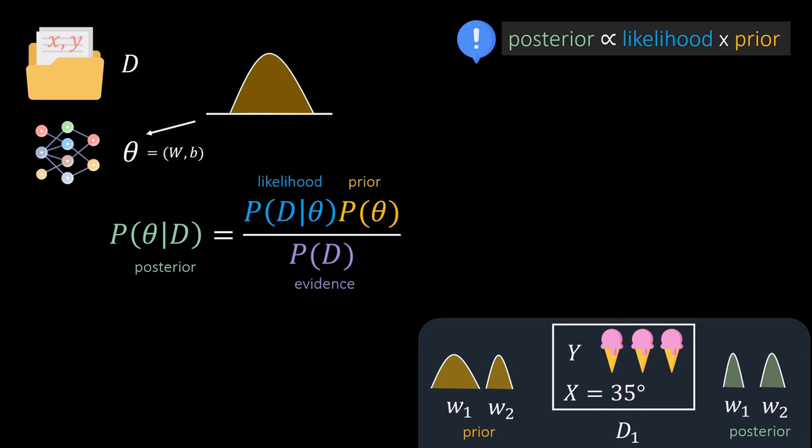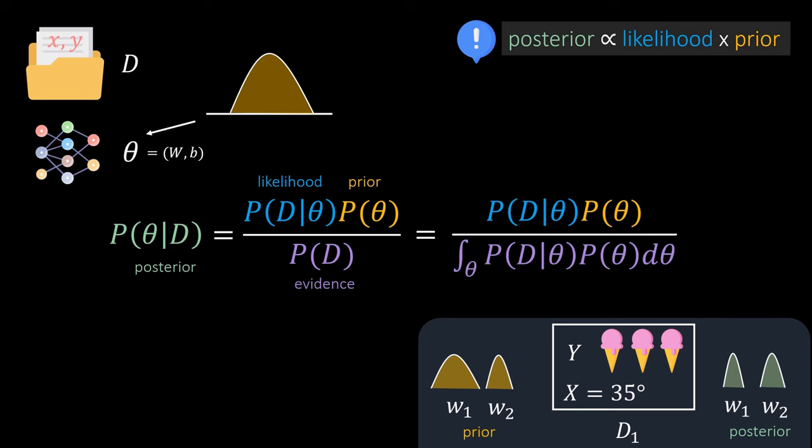The last term in this equation is the evidence or also called marginal probability. You can think of it as some sort of rescaling or normalization based on how likely some specific data is. The problem here however is in order to calculate it we would need to integrate over all possible network parametrizations and in large networks there are exponentially many of them. In practice this is therefore simply not possible and commonly the posterior distribution is only approximated instead of its exact inference.